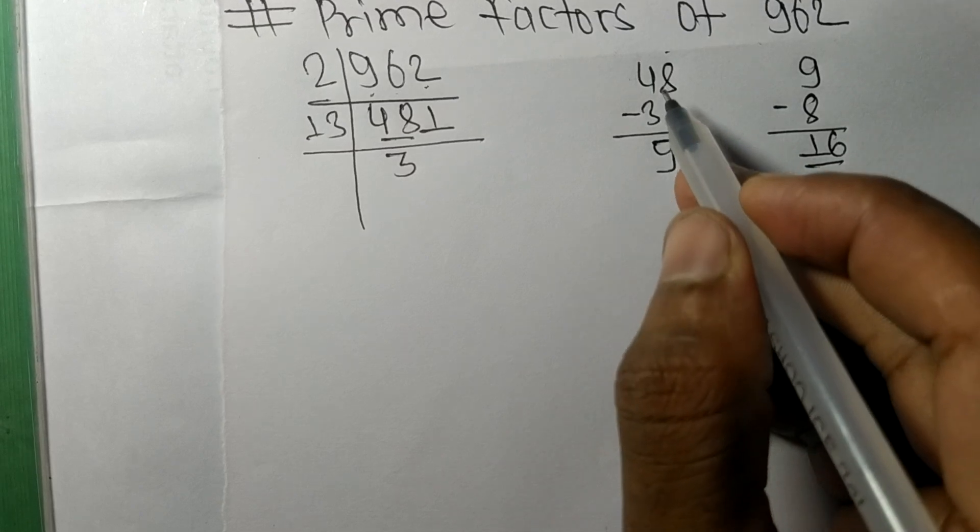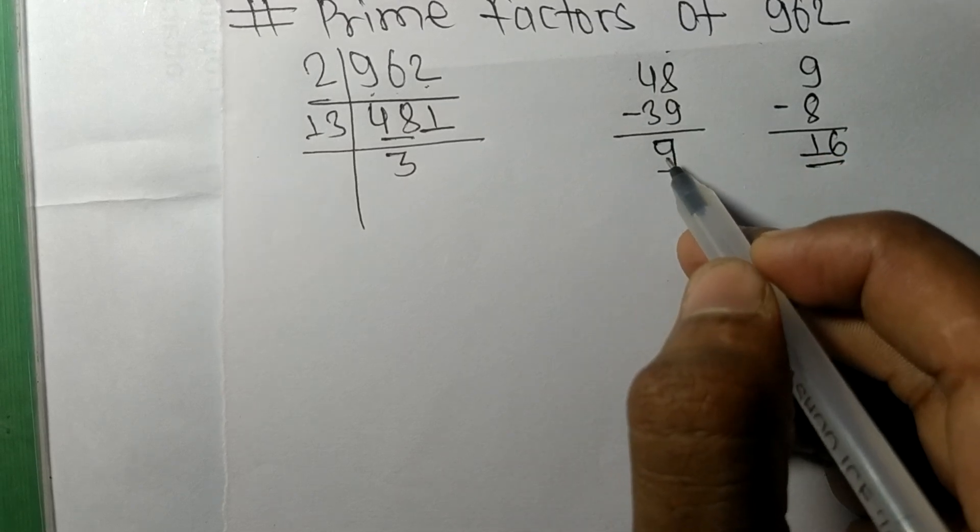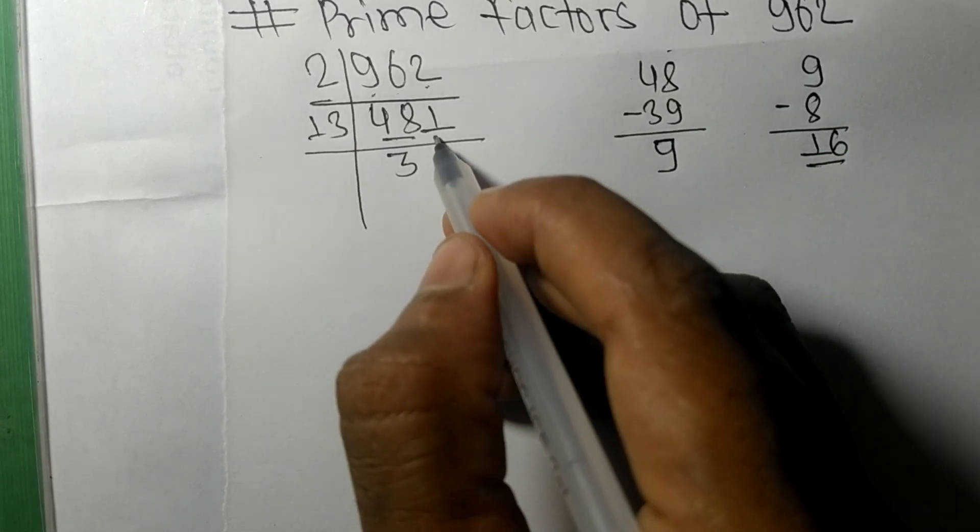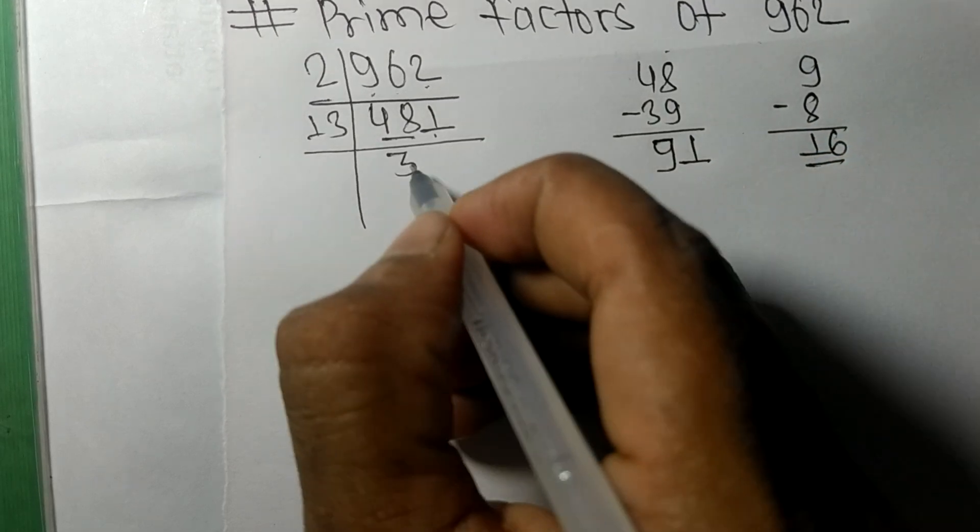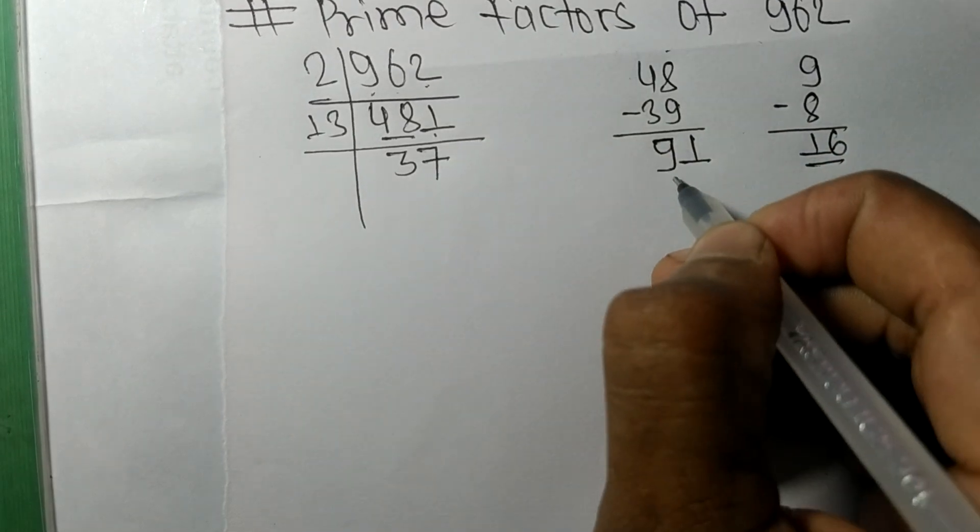48 minus 39 means 9. Now we have 1, so it becomes 91. 13 times 7 means 91.